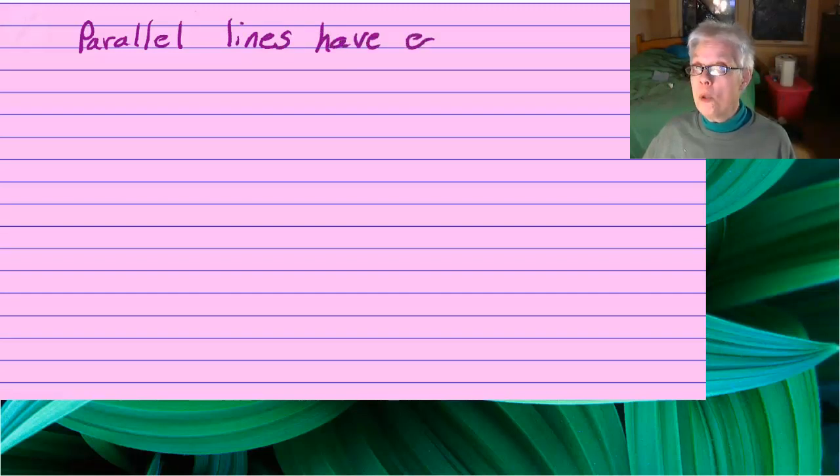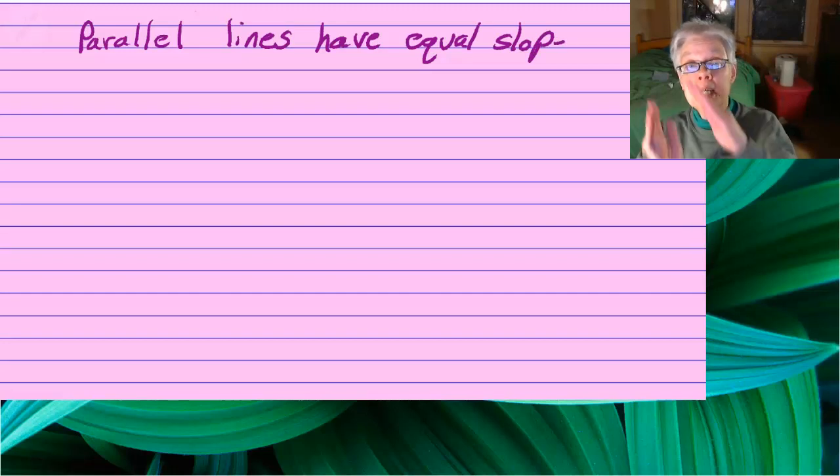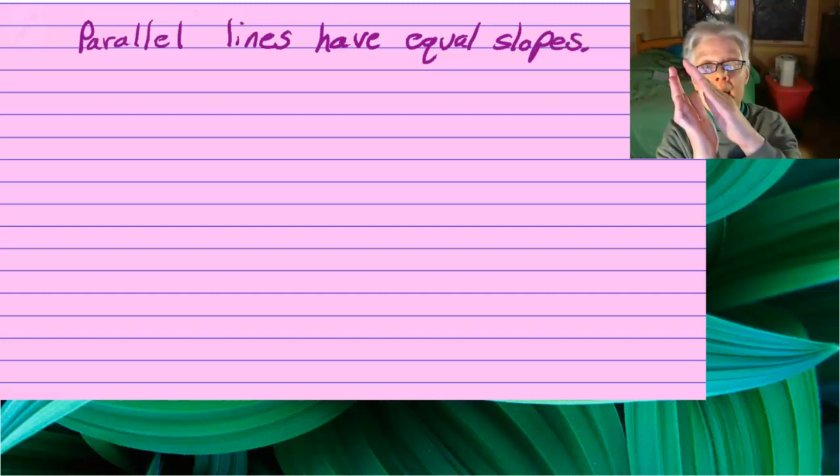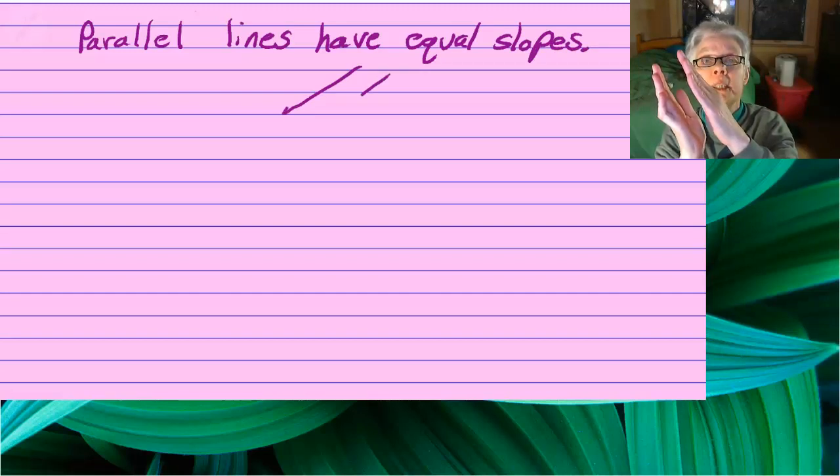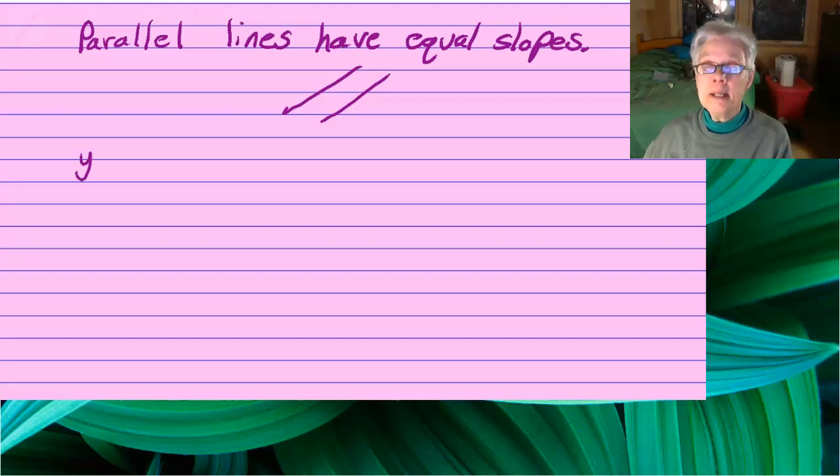Very important here that parallel lines have equal slopes because they have the same tilt. They travel side by side, so it makes sense that they have the same slope.